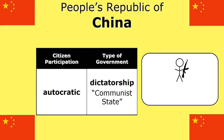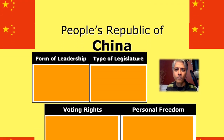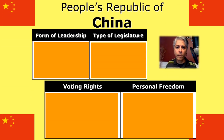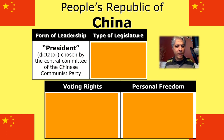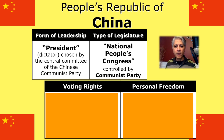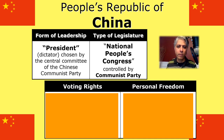Even though China has a communist form of government, they do not have a communist economy anymore — we'll talk about that later. For form of leadership, China calls their dictator a president, but he is a dictator. Legislature-wise, they have the People's National Congress. It's sort of elected, but really it's controlled by the communist party, so it's not really a legislature in the usual sense.